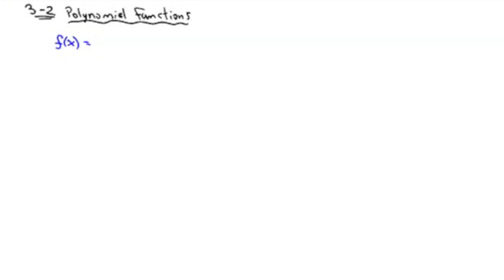Did I ever show you the general polynomial in here? Maybe not. Maybe I should start simple. Let's say we talked about a cubic. We would write AX cubed plus BX squared plus CX plus D. That would be a cubic function. That would be degree 3.